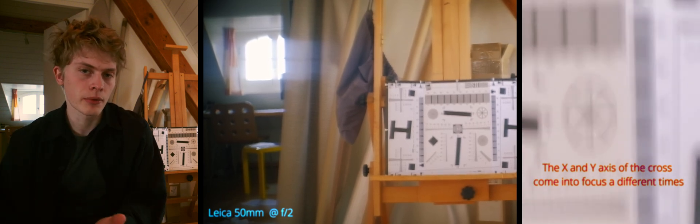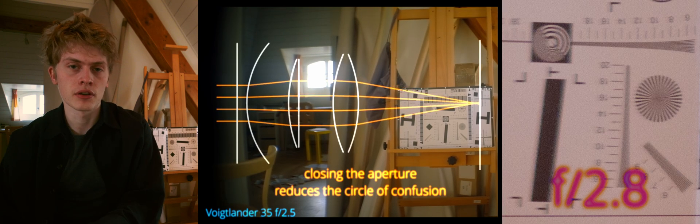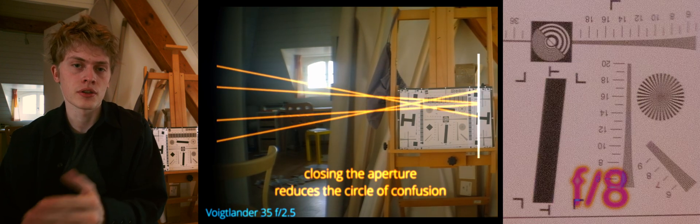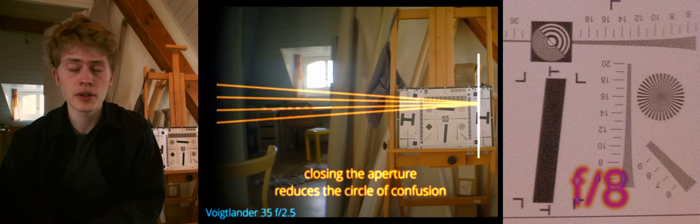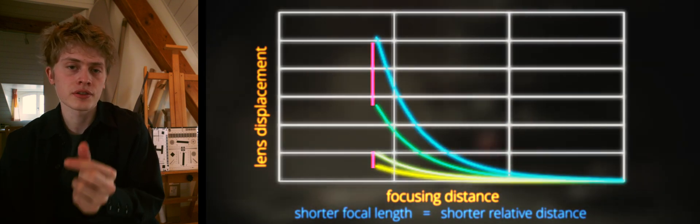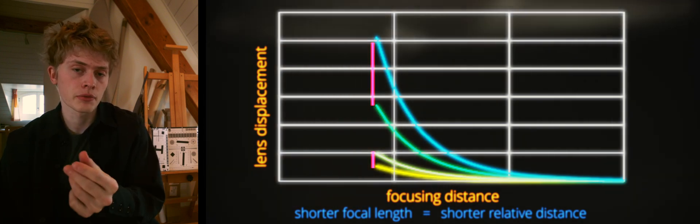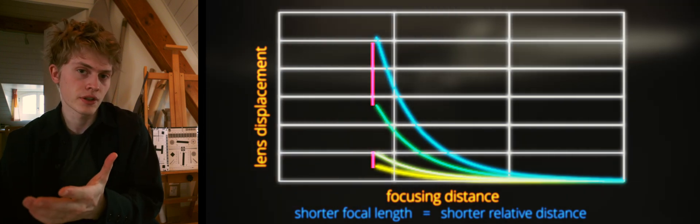Now there are two main ways to get a sharper image, other than moving the front element. The first is to stop down the lens, so you'll get rid of some of the spherical aberration, and also your depth of field will increase to cover both focus points. The other way is generally to just go for a wider focal length. This will make the difference in the two focal lengths smaller, and thus they'll be closer to each other.